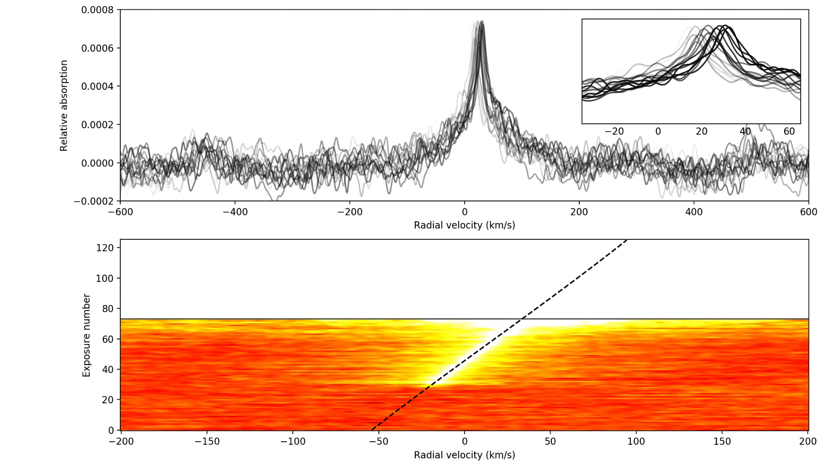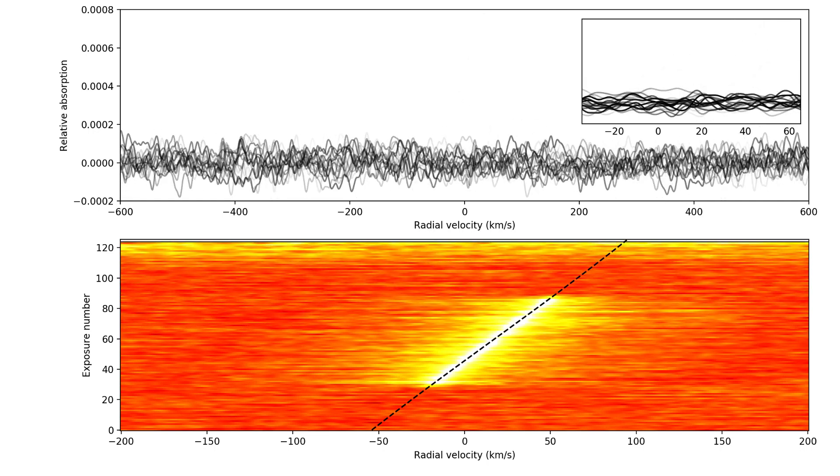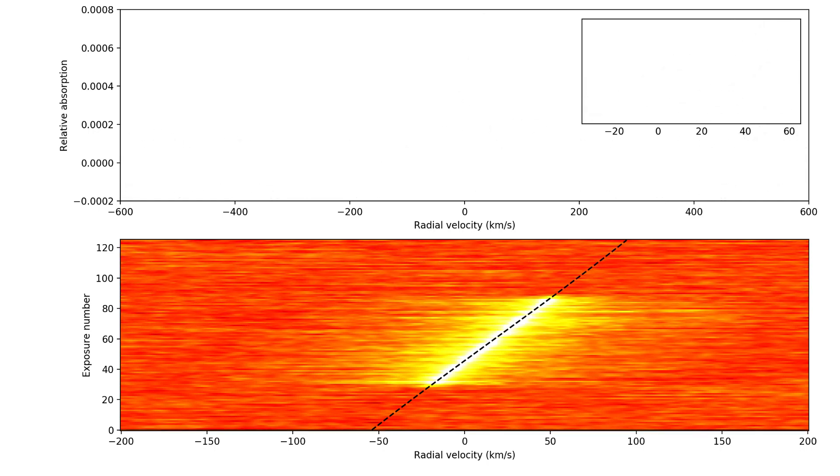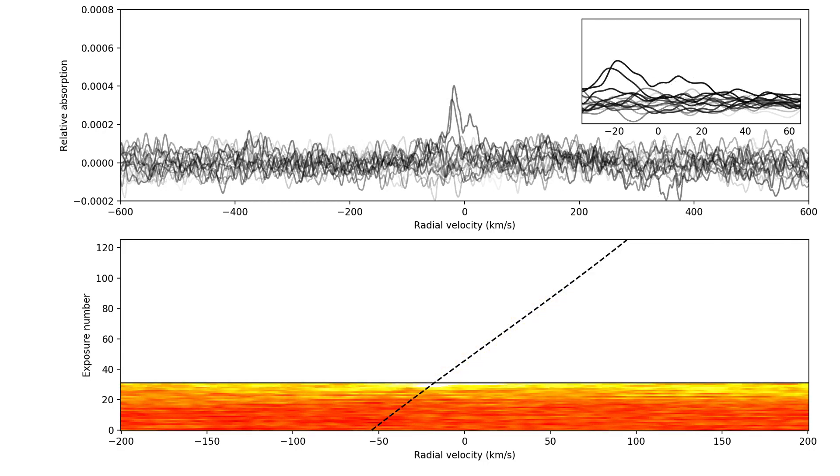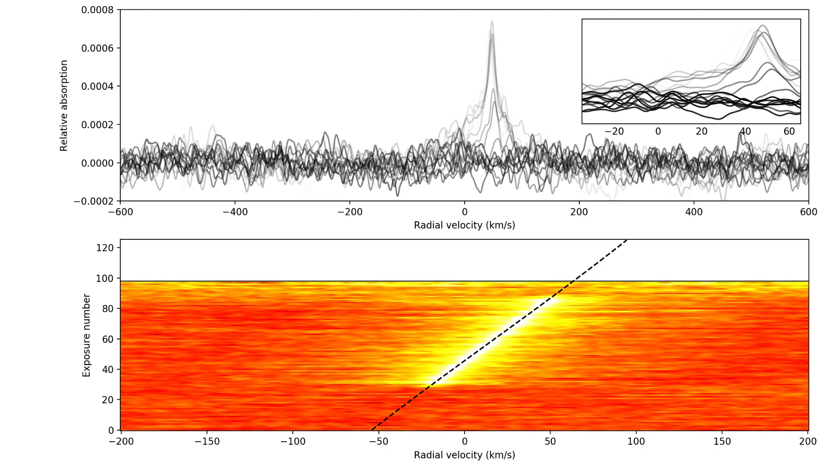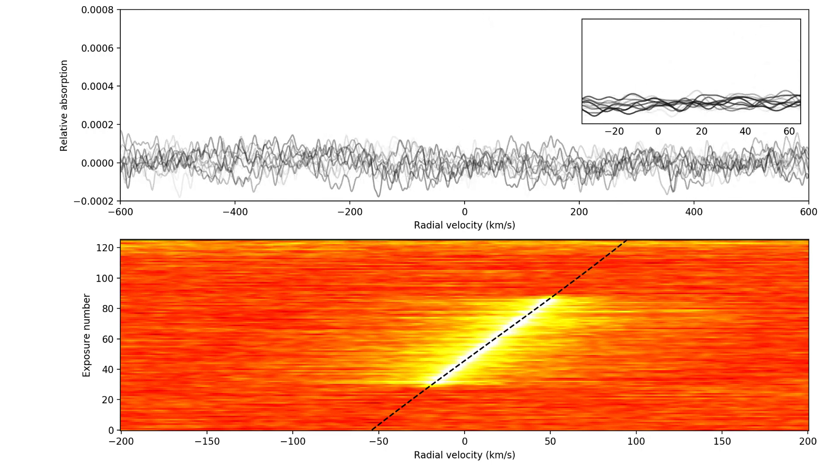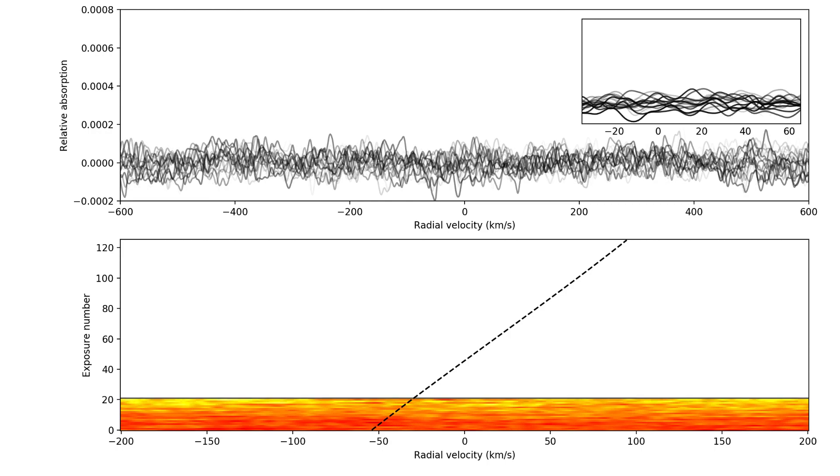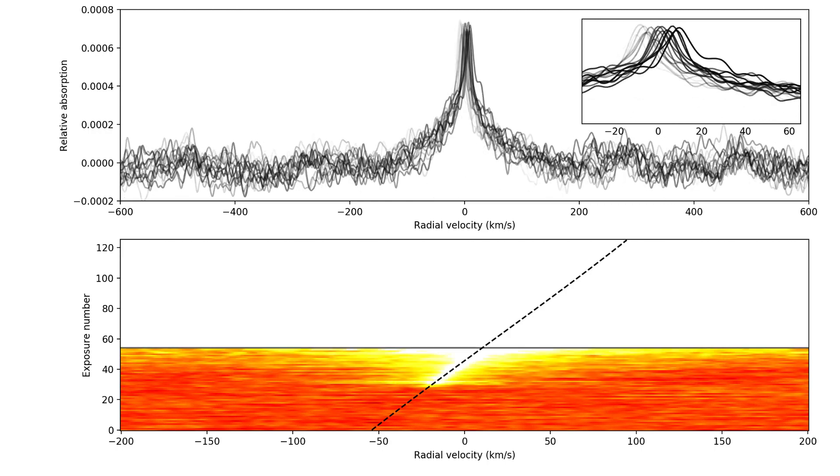If we don't know the stellar mass accurately, or if the planet is not transiting, we don't know this. Nonetheless, we can average over the in-transit exposures, assuming a range of possible orbital velocities, as shown in the following animation.